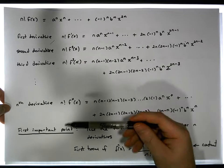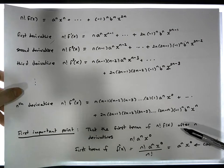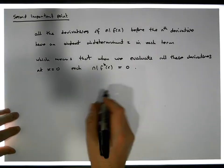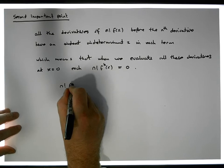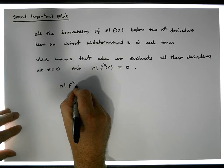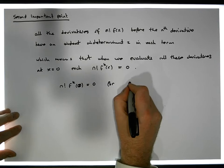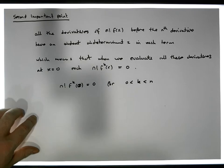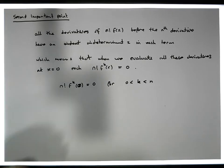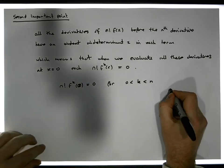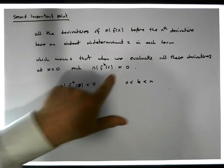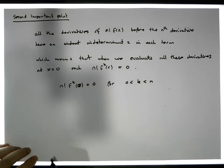Every derivative after the nth derivative is going to give us a constant term as well — actually an integer value. So the key point is: n factorial times f^(k)(x) evaluated at zero is equal to zero for all k where zero is less than k less than n. In other words, for all derivatives up to n but not including the nth term, it's equal to zero. Every derivative after the nth derivative gives us a constant term.